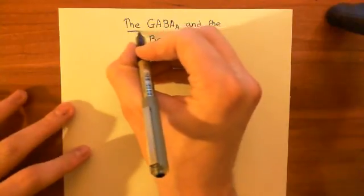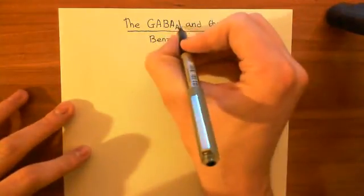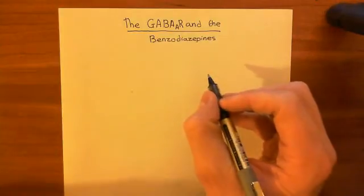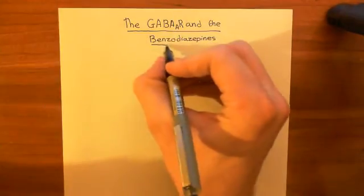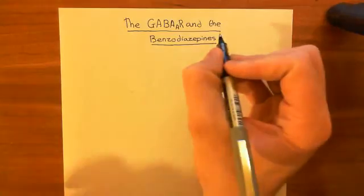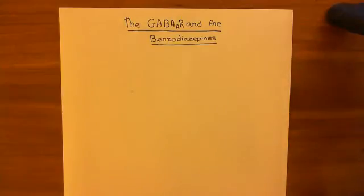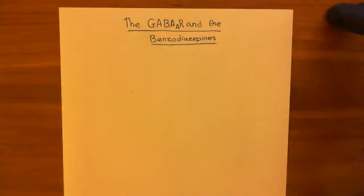So the GABA-A receptors and the benzodiazepine drugs is the topic for this video. Firstly, I'm going to give you a little bit of an introduction to the GABA-A receptors and what they do in the context of the whole brain. Then we'll look at the structure of the GABA-A receptors, and we'll look at the drugs that interact with them — not just the benzodiazepines, but also agonists, antagonists, open channel blockers, and things like that. But then we'll look at the benzodiazepines in particular.